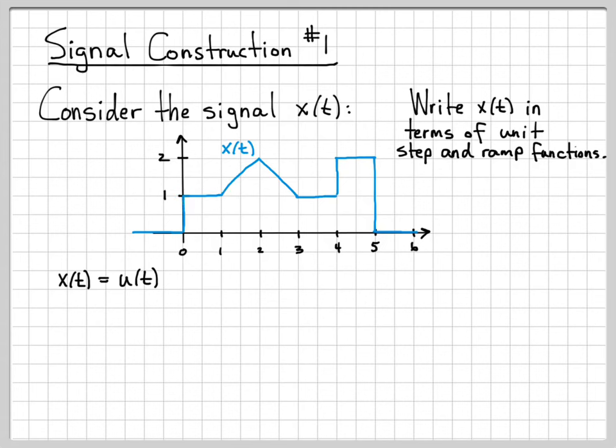The next thing that happens is right here at time one. At time one, all of a sudden, we start increasing linearly with time. We start ramping up. If you take the time to compute the slope, we see that this increase has a slope of one. So it's like at time one, a unit ramp function has turned on. So we can represent that by plus r(t-1). This ramp function turns on at time one, so it's r(t-1). That will get us through this linear increase between times one and two.